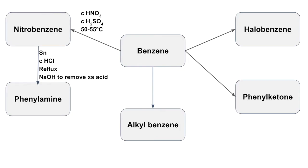The third conversion is benzene to a halobenzene — that's where you substitute a hydrogen on the benzene for a halogen atom. To do that, you react your benzene with a halogen in the presence of a halogen carrier catalyst. For example, if you were reacting benzene with chlorine, you could use AlCl3 or FeCl3 as your catalyst.